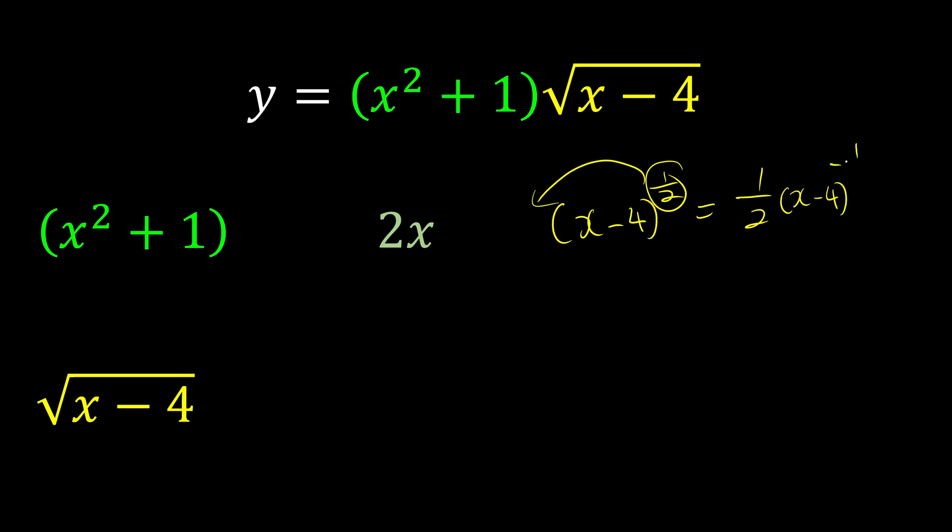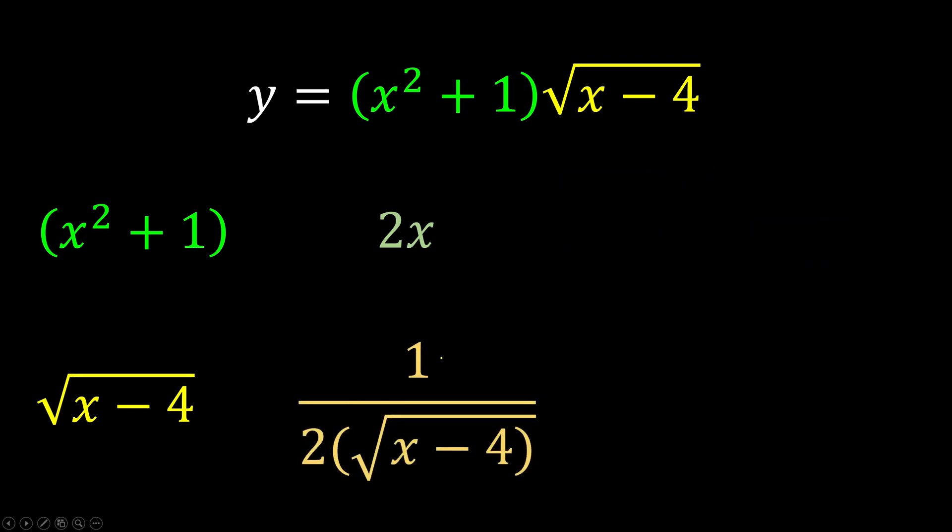But we know -1/2 is located at the bottom. If you don't know how to do this, you can see the previous video that we have a trick to do it faster. So this is 1/(2√(x - 4)).